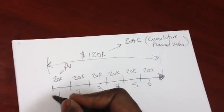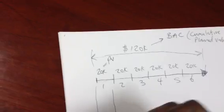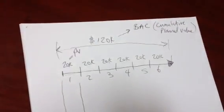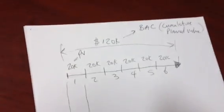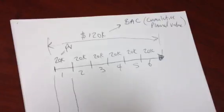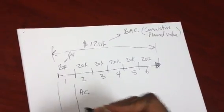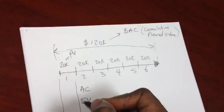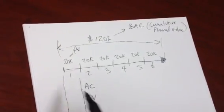Now, the way earned value works, let's take a look at one month, for example. Let's just look at month one. So, we know our PV is 20K. That 20K means within the time frame of one month, I'm going to get $20,000 worth of work done. But we also have two other metrics that need to be factored in. Those two other metrics are called AC, actual cost, and EV. So, this is your plan to get $20,000 worth of work done in month one.